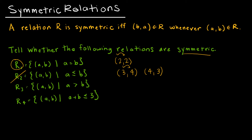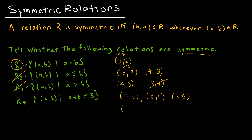R3, where A is greater than B, is similar to R2: if I have (4, 3) and switch to (3, 4), that's not in the set. So R3 is not symmetric. For R4, if A plus B is less than or equal to 3: (0, 0) is in there, and switching to (0, 0) is also in there; (0, 1) and (1, 0) are both in there. So R4 is symmetric because switching the order preserves membership.